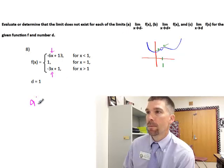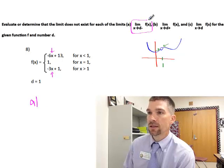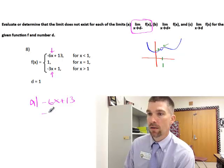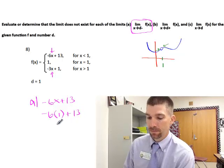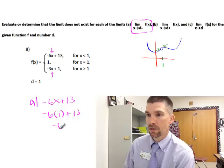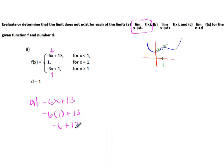When we look at part (a), the limit as we approach d from the left, that's going to be -6x + 13. We can substitute 1 in here because that's what we're interested in. When I do that, I get a 7. I'd have -6 + 13, which is 7.